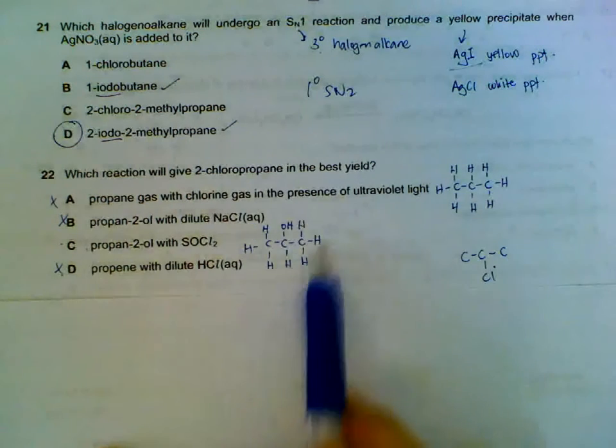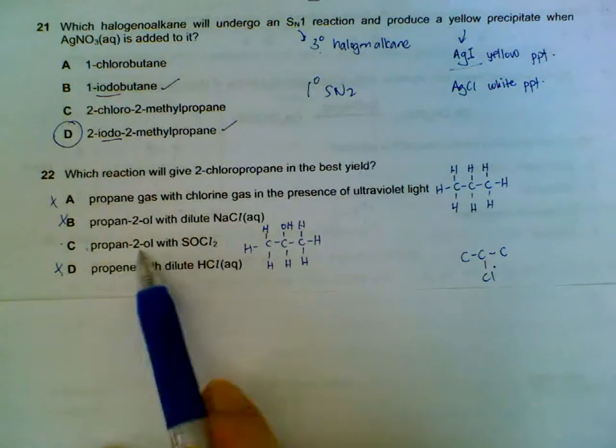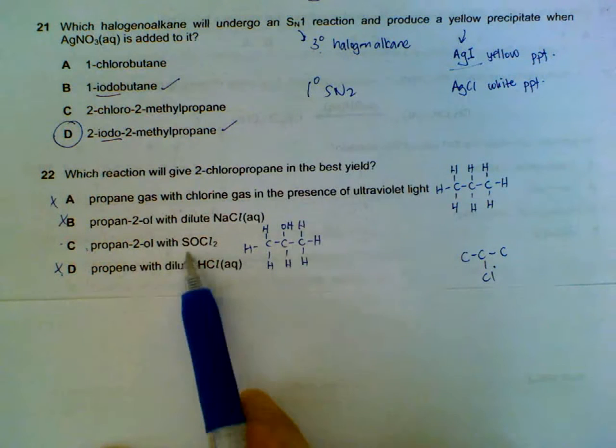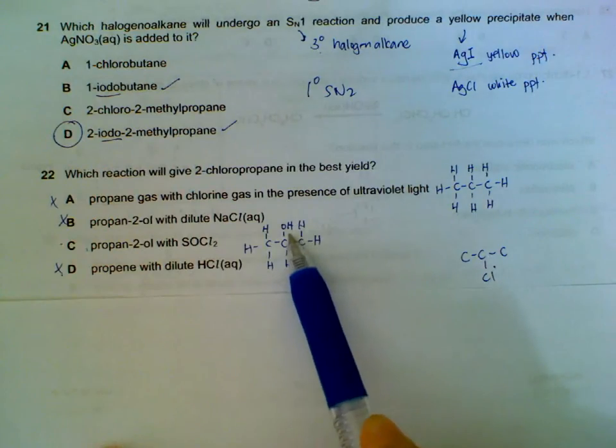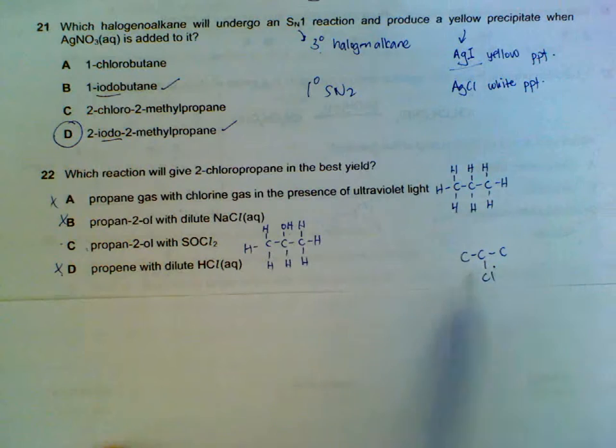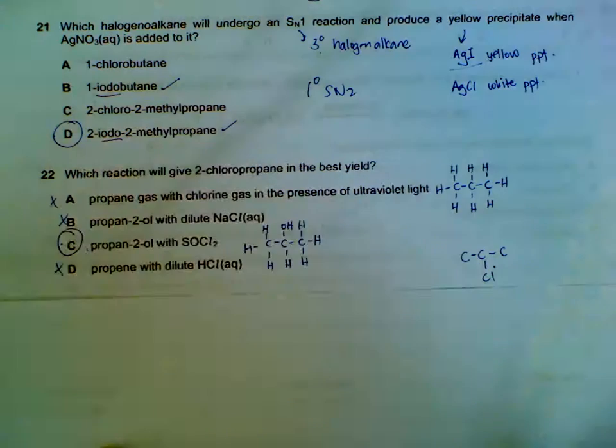C, we have an alcohol, propan-2-ol, and if you use SOCl2, the Cl will only be replacing the OH here. So it's very specific. We will end up with 2-chloropropane. So C will give us the best yield.